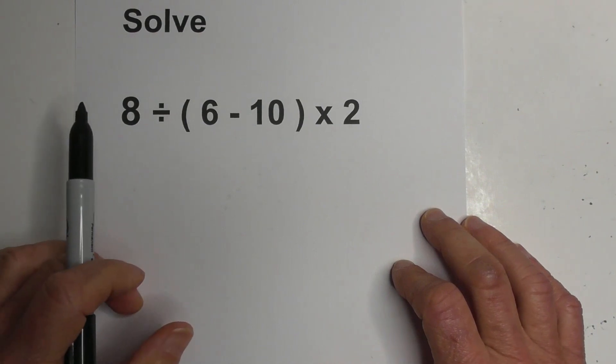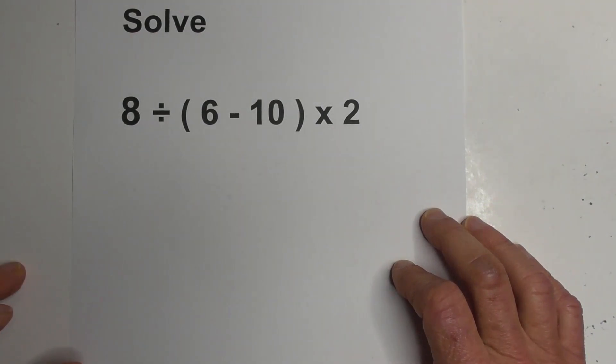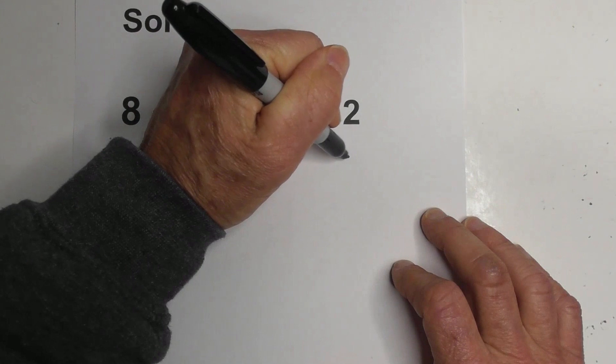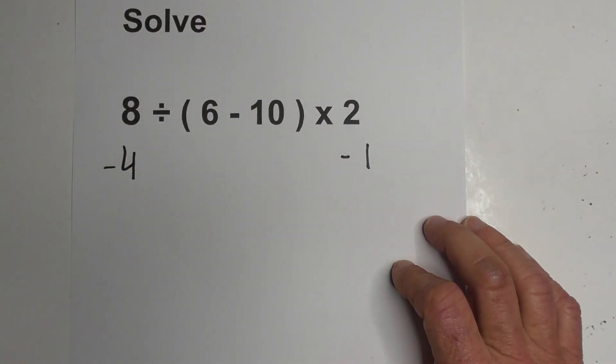If you take a moment and solve this, you could easily come up with two answers. You could come up with a negative four or you could come up with a negative one. And only one of these answers is correct.